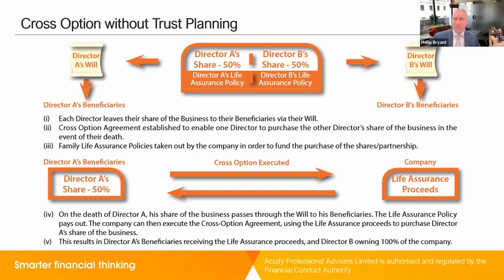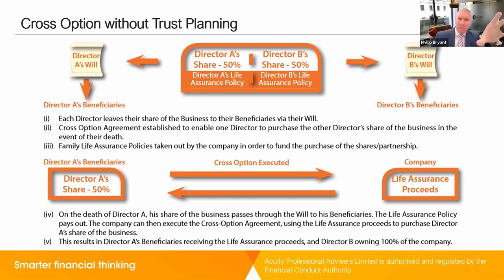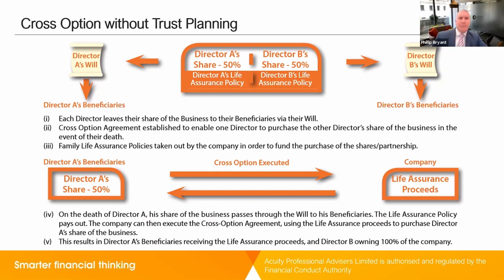These funds are also at risk from claims from divorce, remarriage, bankruptcy, and long-term care fees. For the surviving shareholder — Director B — they now own 100% of the limited company, and that 100% is at risk from the same things: divorce, remarriage, bankruptcy, and long-term care. With trading business property relief, it is applicable. However, if they sell the business, the cash proceeds will then be part of their estate and liable for inheritance tax. In addition, with regards to capital gains tax, the growth in Director B's share has increased, and hence there's going to be a significant CGT liability as well.